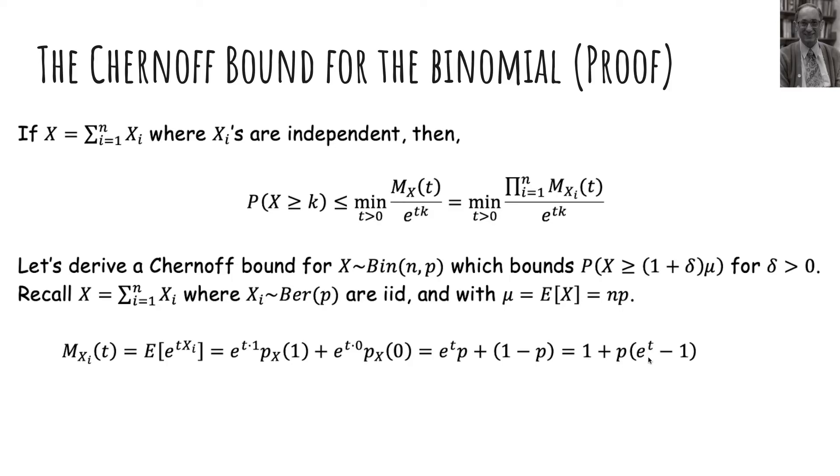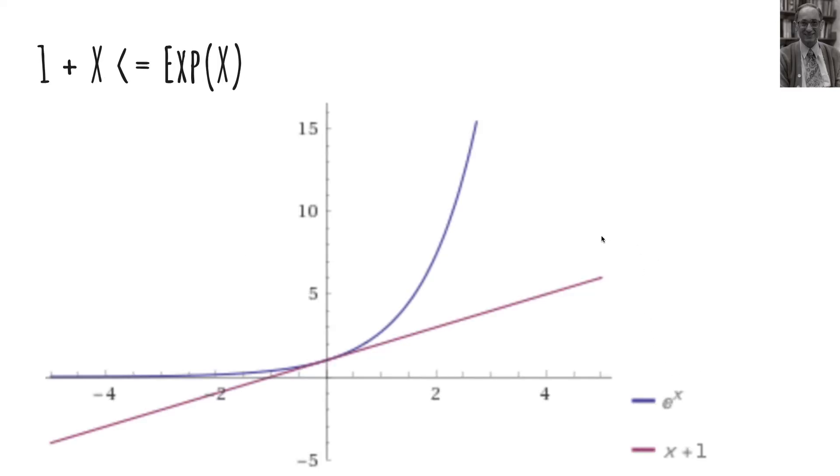This thing here is of the form 1 plus x, where this huge thing is x. So I wanted to really quickly show you this inequality, which is that 1 plus x is always less than or equal to e to the x. This bottom line is 1 plus x, this top curve is e to the x, and this proves that 1 plus x is always less than or equal to e to the x.